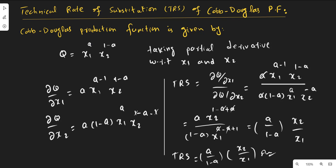We also need to take the first-order derivative of the function with respect to x2. We will multiply the power with the coefficient. So it is 1 minus a; 1 minus a will come over here, and the power of x2 will be reduced by 1. So it will be minus 1, and this plus 1 will cancel out. This is equal to a times (1 minus a), where 1 minus a is the actual power of x2, and x1 to the power a remains as it is, with the power of x2 reduced by 1, which cancels with plus 1.